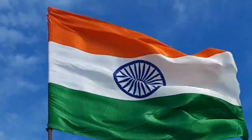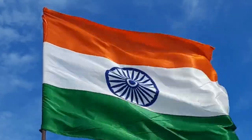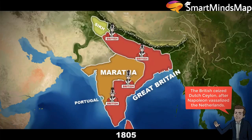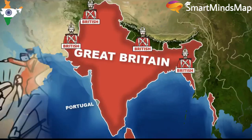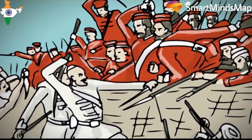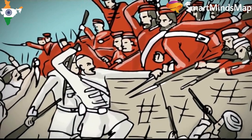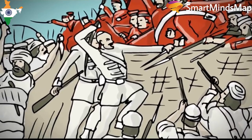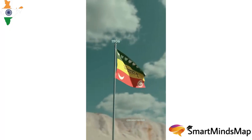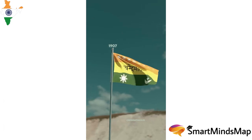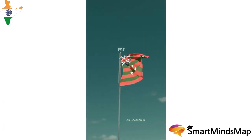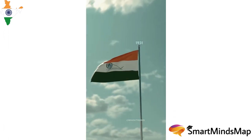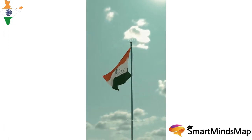The Indian flag is a symbol of India's struggle for independence from British colonial rule, representing the aspirations of the Indian people for freedom, peace, and unity. The Flag Code of India is a set of rules and regulations regarding the display and use of the national flag, introduced to ensure proper respect and honour. It defines protocols for displaying the flag, including guidelines for its size, colour, and placement.